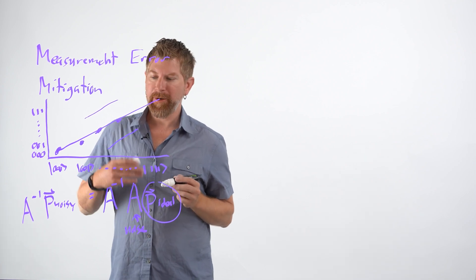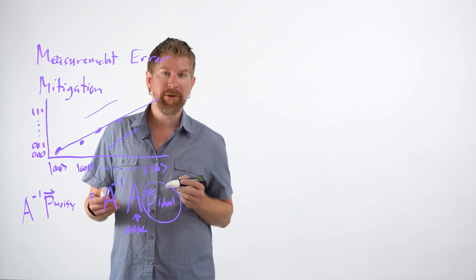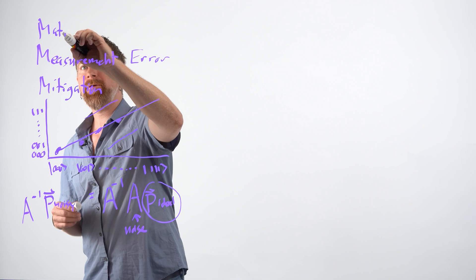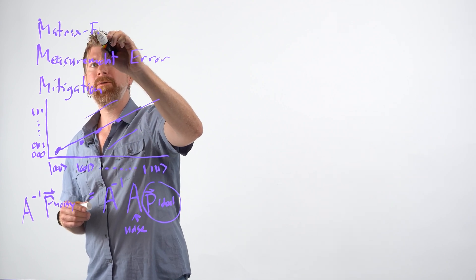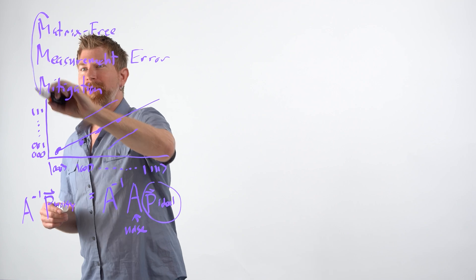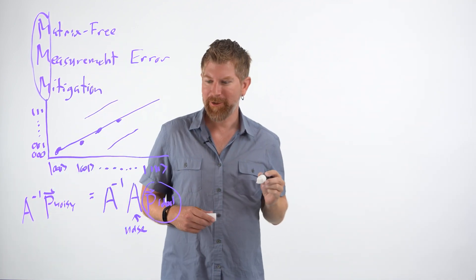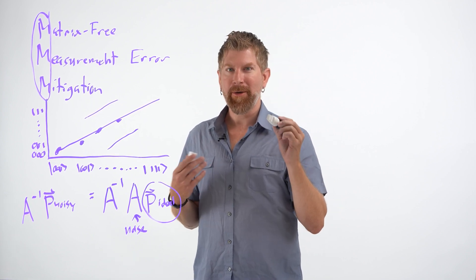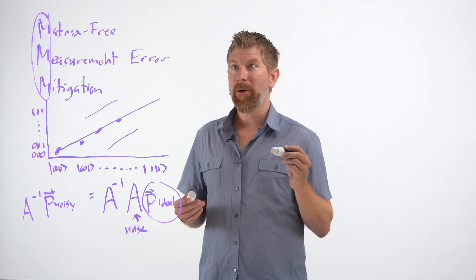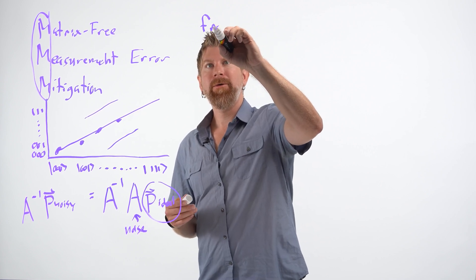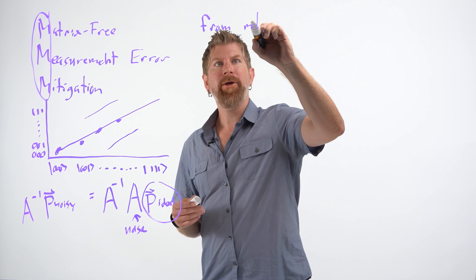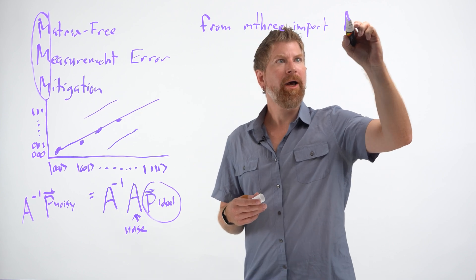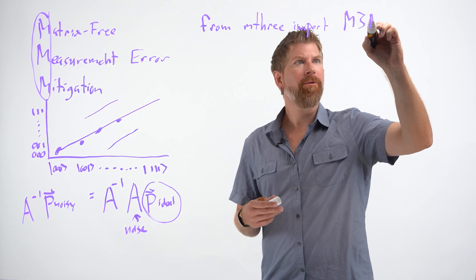This is true in general, but in particular, when these quantum systems get larger and larger, this becomes harder and harder to calculate, which is why we start using a matrix-free version of this. We call it M3 for matrix-free measurement mitigation. The package that we're going to use is M3 — it's a Qiskit extension, and we can pip install it and import what we need from it. In particular, from M3, import capital M3Mitigation.